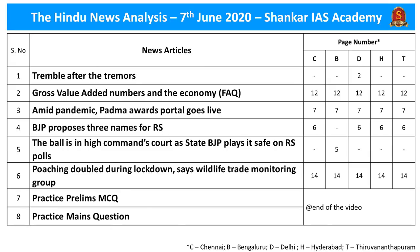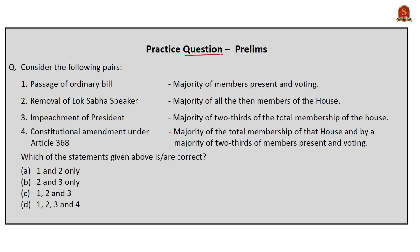Before starting today's news analysis, let us take up this multiple choice question. This question is based on different types of majorities discussed in the constitution. On 2nd June we discussed about the speaker, chairman of Rajya Sabha, the removal etc., and a few people — Dinesh Kumar, Anjali Saini, Rohanyam — have asked us to clarify the majority required to remove the speaker. So in this session we are going to discuss all the majorities present in the constitution.